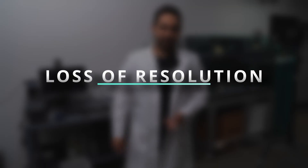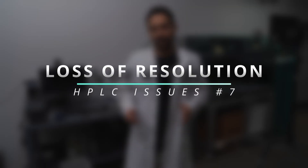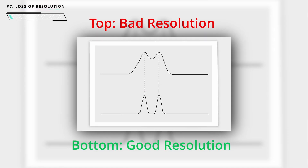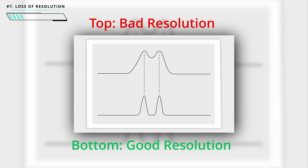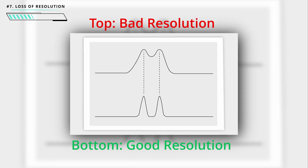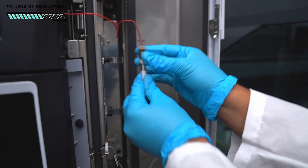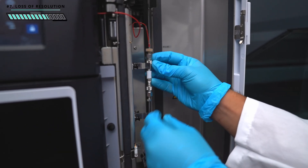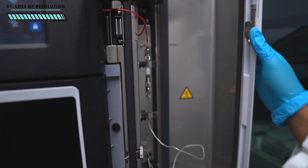The seventh problem is loss of resolution. Normally you'd see nice sharp peaks, but with loss of resolution those peaks become fatter and more blurred. Most likely that's column degradation — it's time to get a new column. If it's not the column, something may be off with your mobile phase.